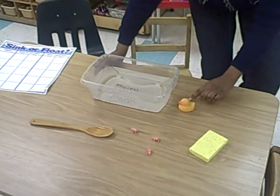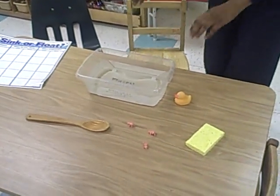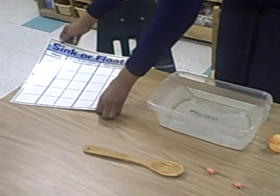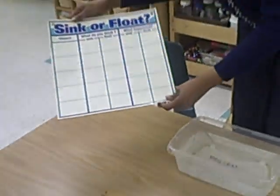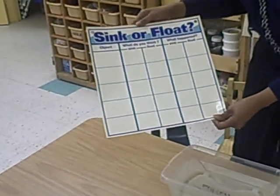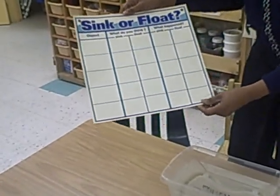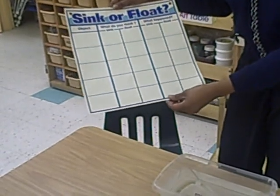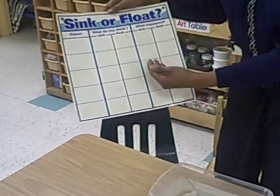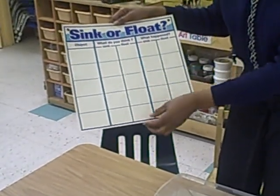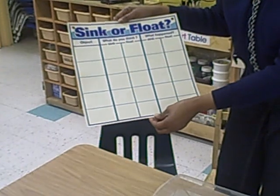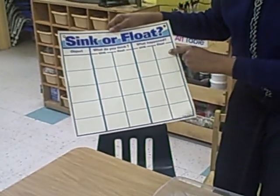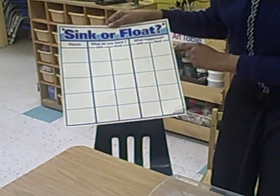Before the children place the object into the container with water, they will predict what will happen to the objects. Then they will use a sink or float chart we have here. We will graph it together and write what has happened to the object. Did the object sink? Did the object float?